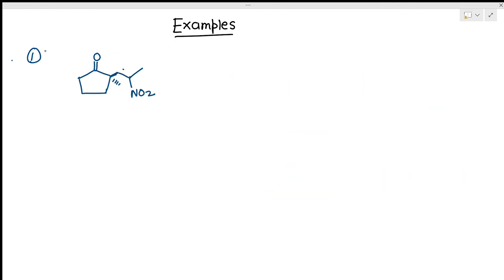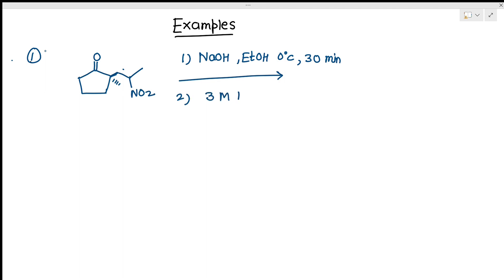Now let's look at the examples. In the first example, the compound is firstly treated with NaOH in ethanol at 0 degrees centigrade for 30 minutes, then refluxed with HCl at 0 to 20 degrees centigrade for 12 hours. The NO2 group is converted to the carbonyl compound; all other features remain as they are.